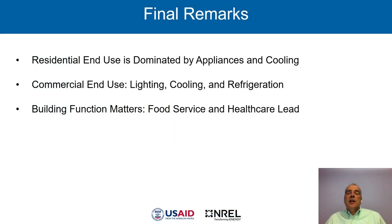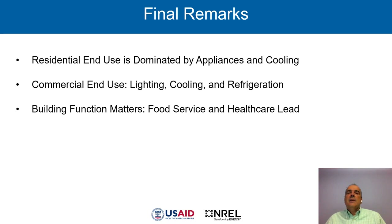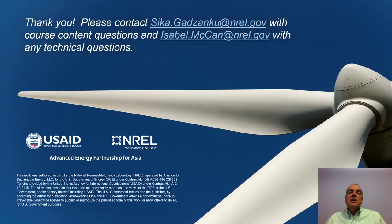This was an overview of end uses for buildings. Residential end use is dominated by appliances and cooling — which would be the case in Southeast Asia, excluding space heating. Commercial end use includes lighting, cooling, and refrigeration, and building function really matters. In commercial buildings, food service and healthcare facilities lead energy end uses in the US, and we expect that would also be the case in other countries. Thank you very much. If you need to ask questions, you can contact Sika and Isabel.